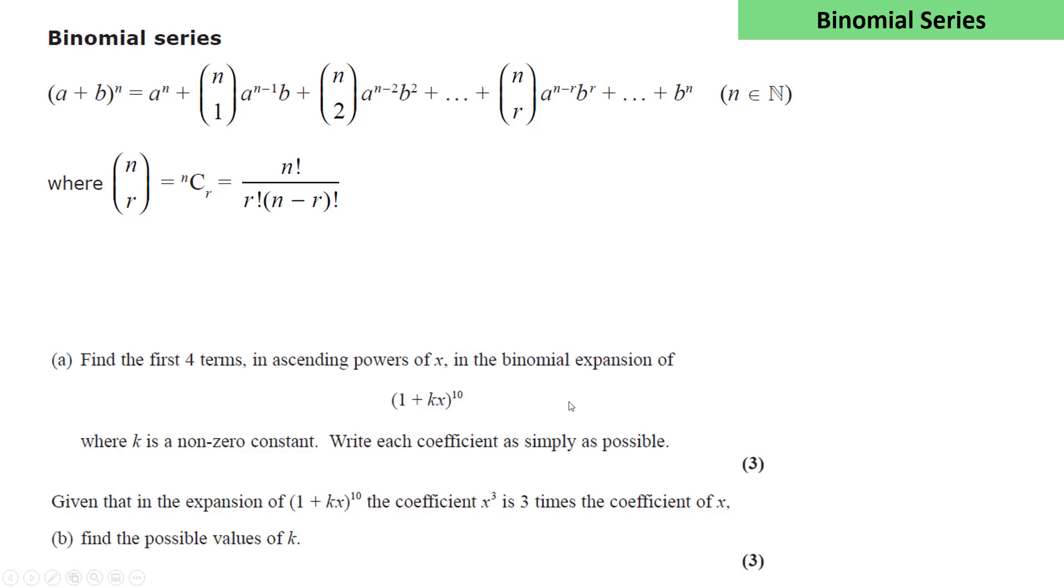Here's an example question. Find the first four terms in ascending powers of x in the binomial expansion of (1 + kx)^10. Your first job will be to identify the expressions for A, B, and n, which are to be substituted into the formula.